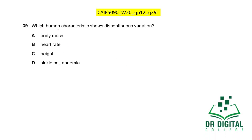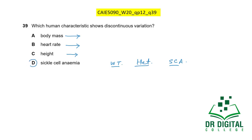In this question, which human characteristic shows discontinuous variation? Body mass, heart beat rate, and height all show continuous variation with countless intermediate values. Sickle cell anemia, however, shows only three distinct categories: wild type (normal), heterozygous (carrier), and sickle cell anemic — three defined groups with no intermediates. This is discontinuous variation. Body mass, heart rate, and height are all continuous variations. The answer is D: sickle cell anemia.